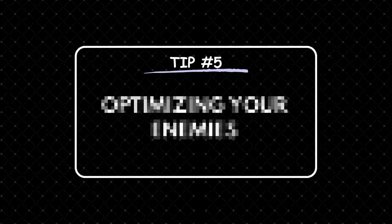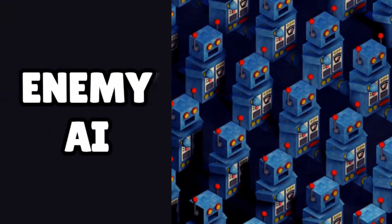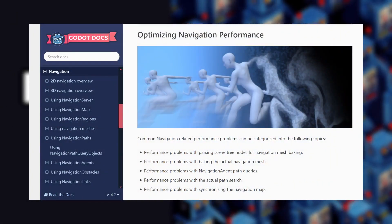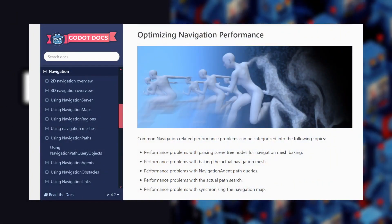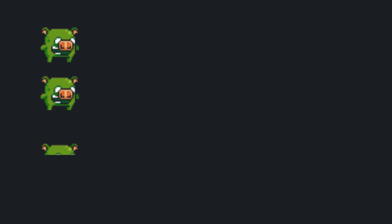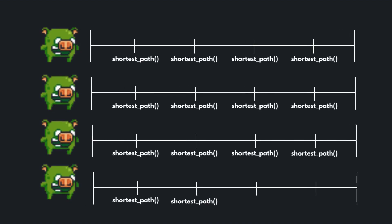Tip number 5: Optimizing your enemies. Let's say you've got over 50 enemy AIs in your game using Godot's navigation algorithm to find the shortest path to your player character. At every physics frame, each enemy is trying to calculate the shortest path to the player, which puts a lot of stress on the CPU.